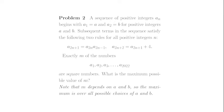Exactly m of the numbers a_1, a_2, a_3, and so on up to a_2022 are square numbers. What is the maximum possible value of m? Note that m depends on a and b.